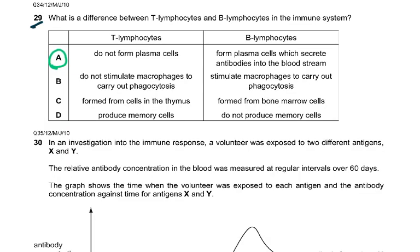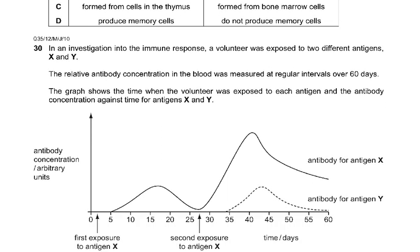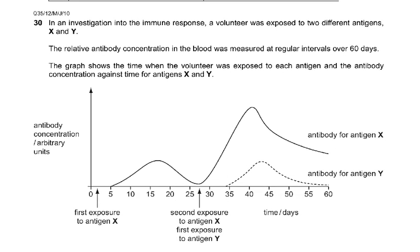Question 29: what is the difference between B and T lymphocytes in the immune system? B lymphocytes form plasma cells that secrete antibodies into the bloodstream; T lymphocytes do not form plasma cells. So the answer is A; the rest is all incorrect.